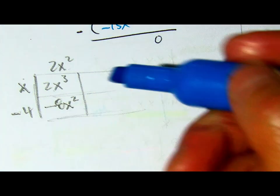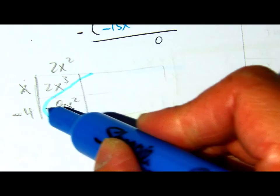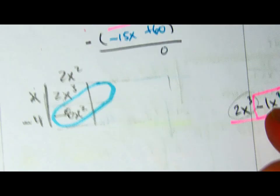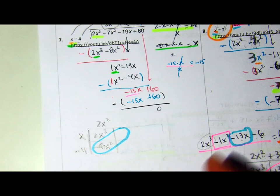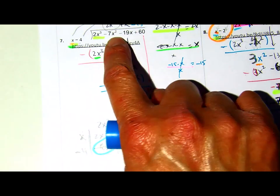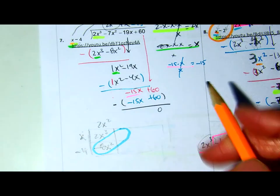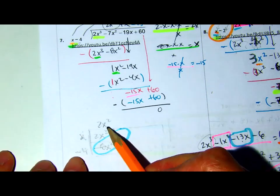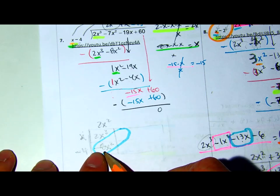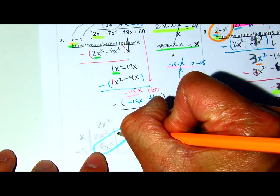Okay. In the diagonal here, these two have to add up to negative 7x squared. So, this can be a positive 1x squared.